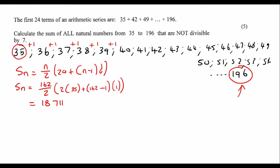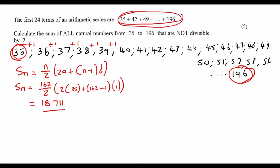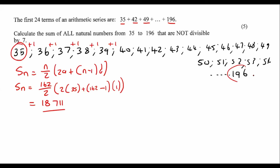If you add up all the numbers from 35 up to 196, that gives you 18,711. Now, Tamrin is asking where the 162 came from — the 162 is the number of terms. If you had to count from 35 to 196 — 35, 36, 37, 38, 39, 40 — all the way to 196, there would be 162 terms. Now look at these numbers: can you see that they are all divisible by seven?